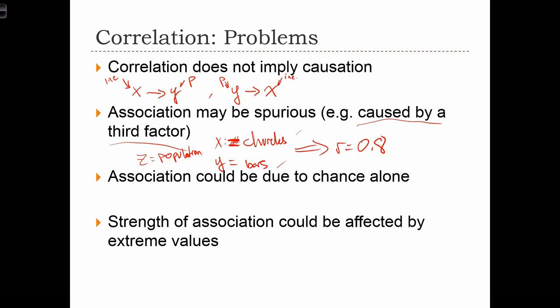So it's just the fact that larger population cities are simultaneously causing there to be more churches in the city, and at the same time, it's causing there to be more bars in the city. So when we conduct a correlation analysis, we have to think about our variables and think about whether or not there's actually a relationship between x and y, or if that relationship is spuriously being caused by some outside factor.